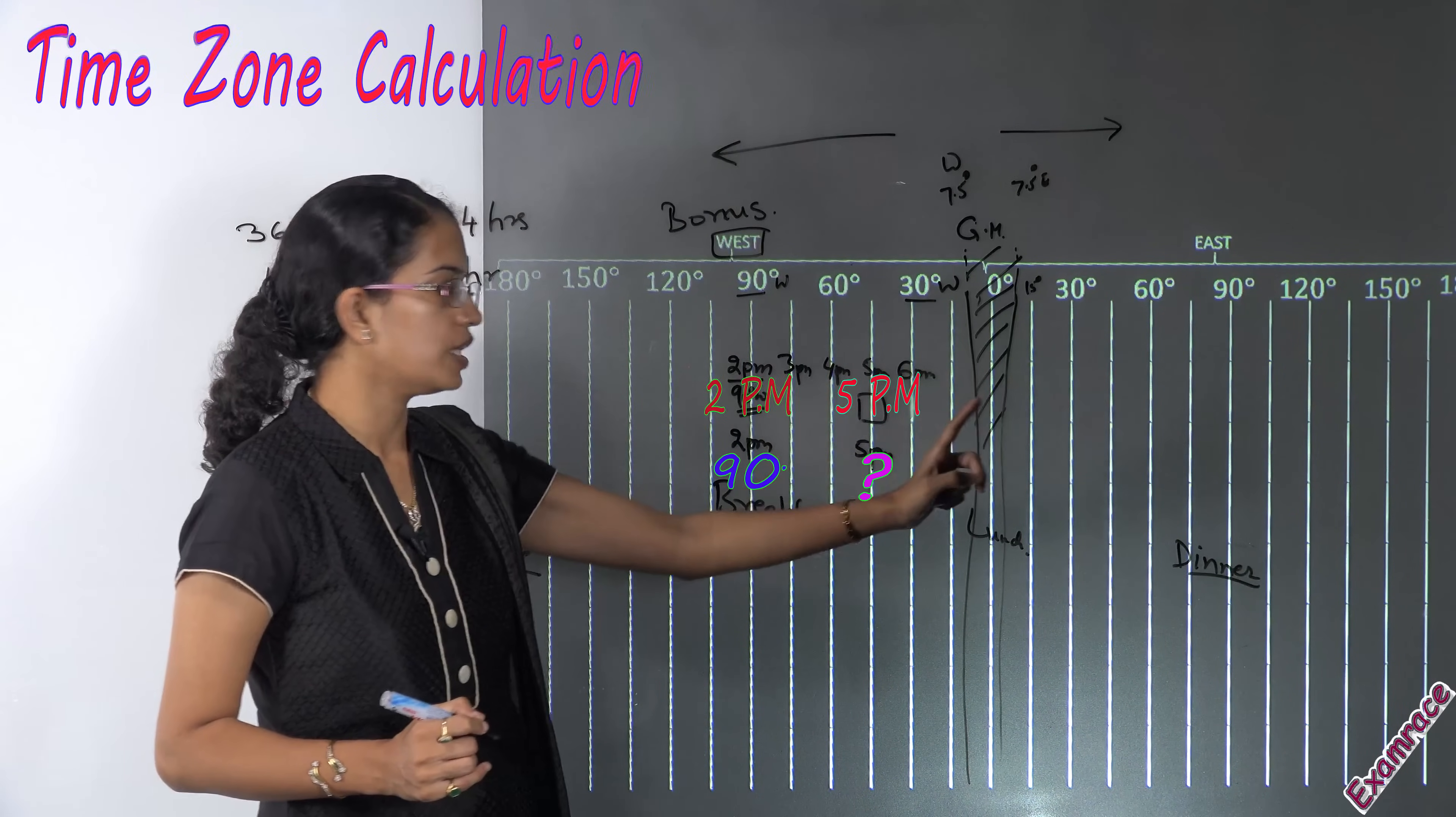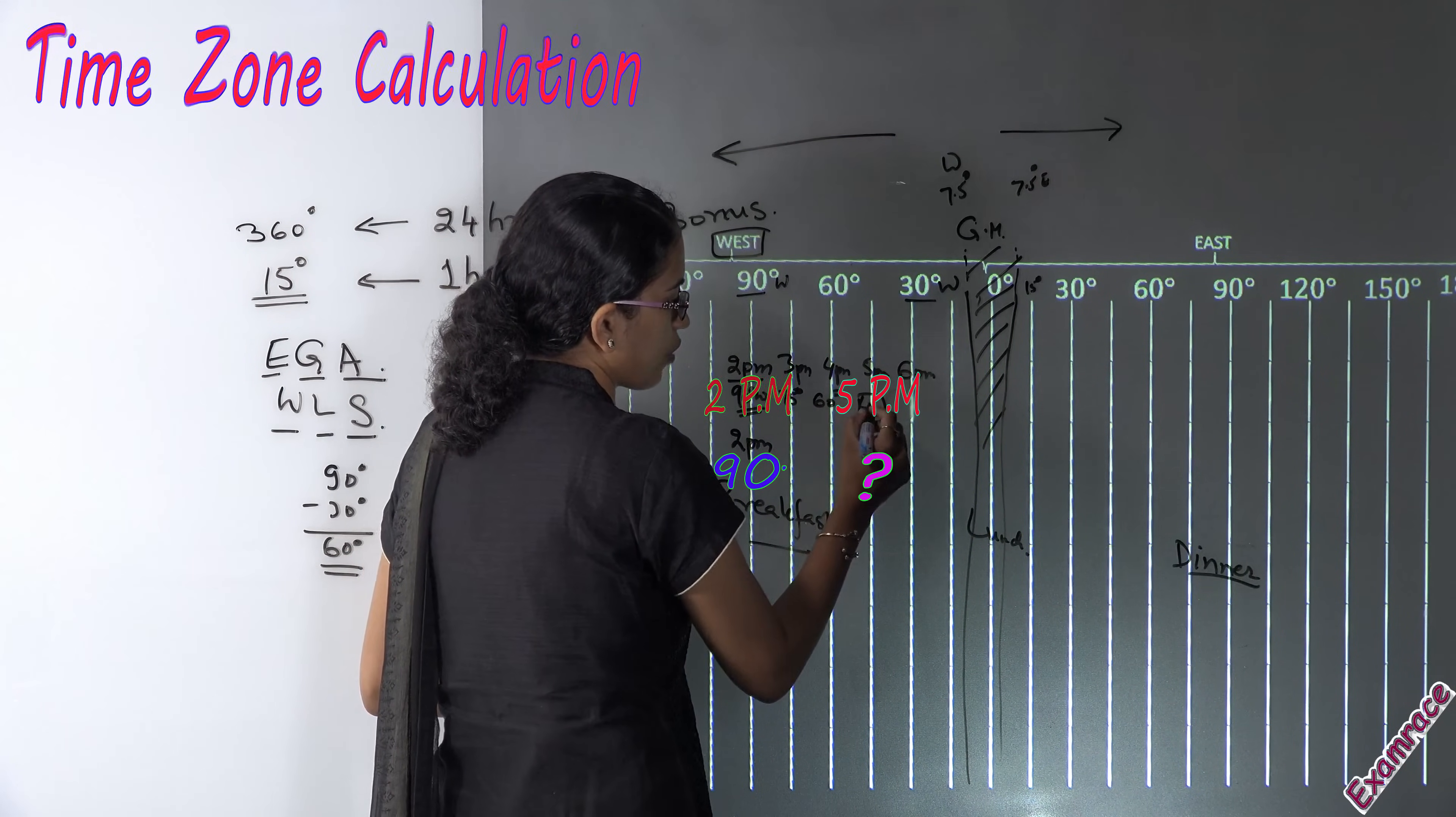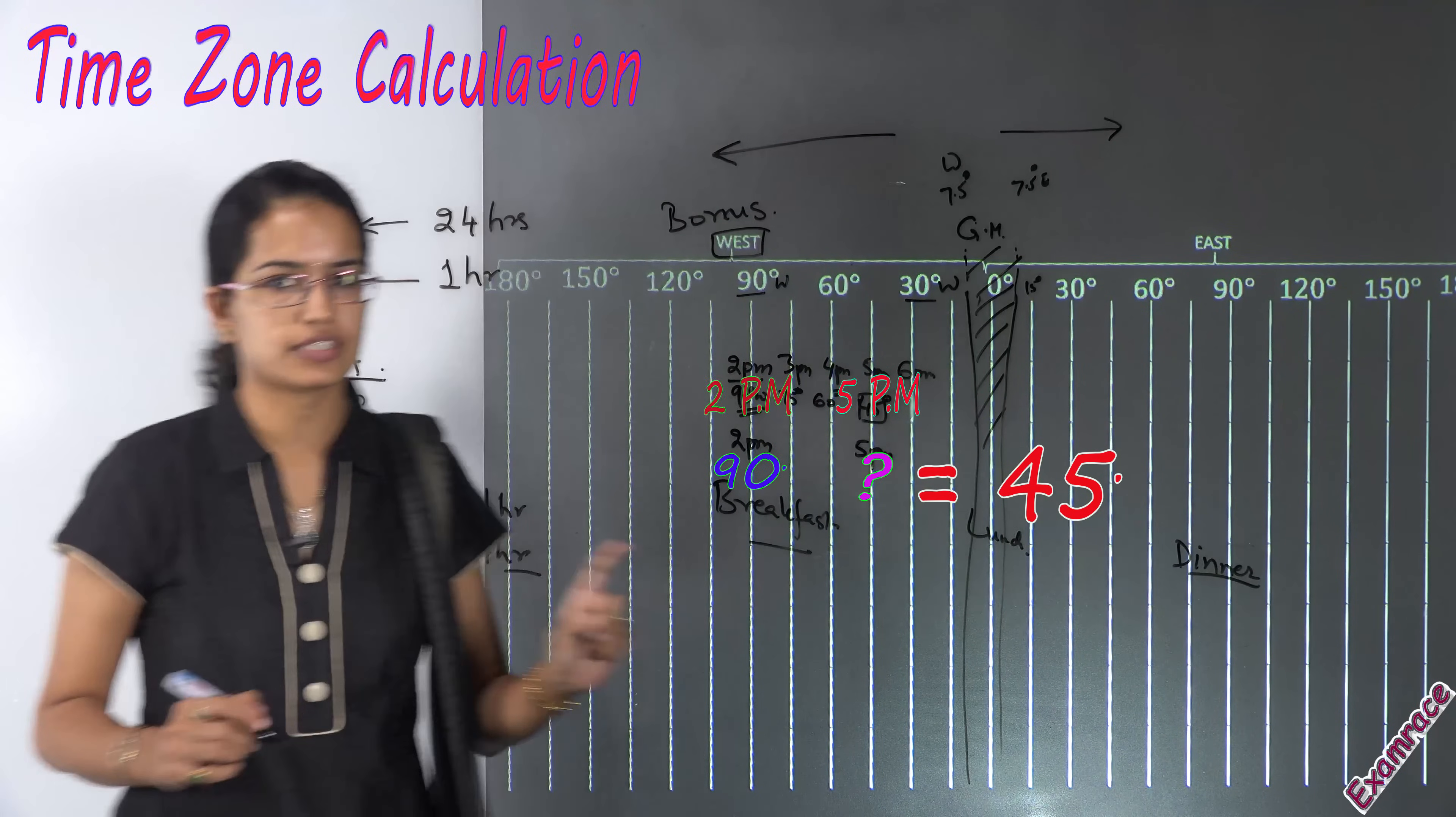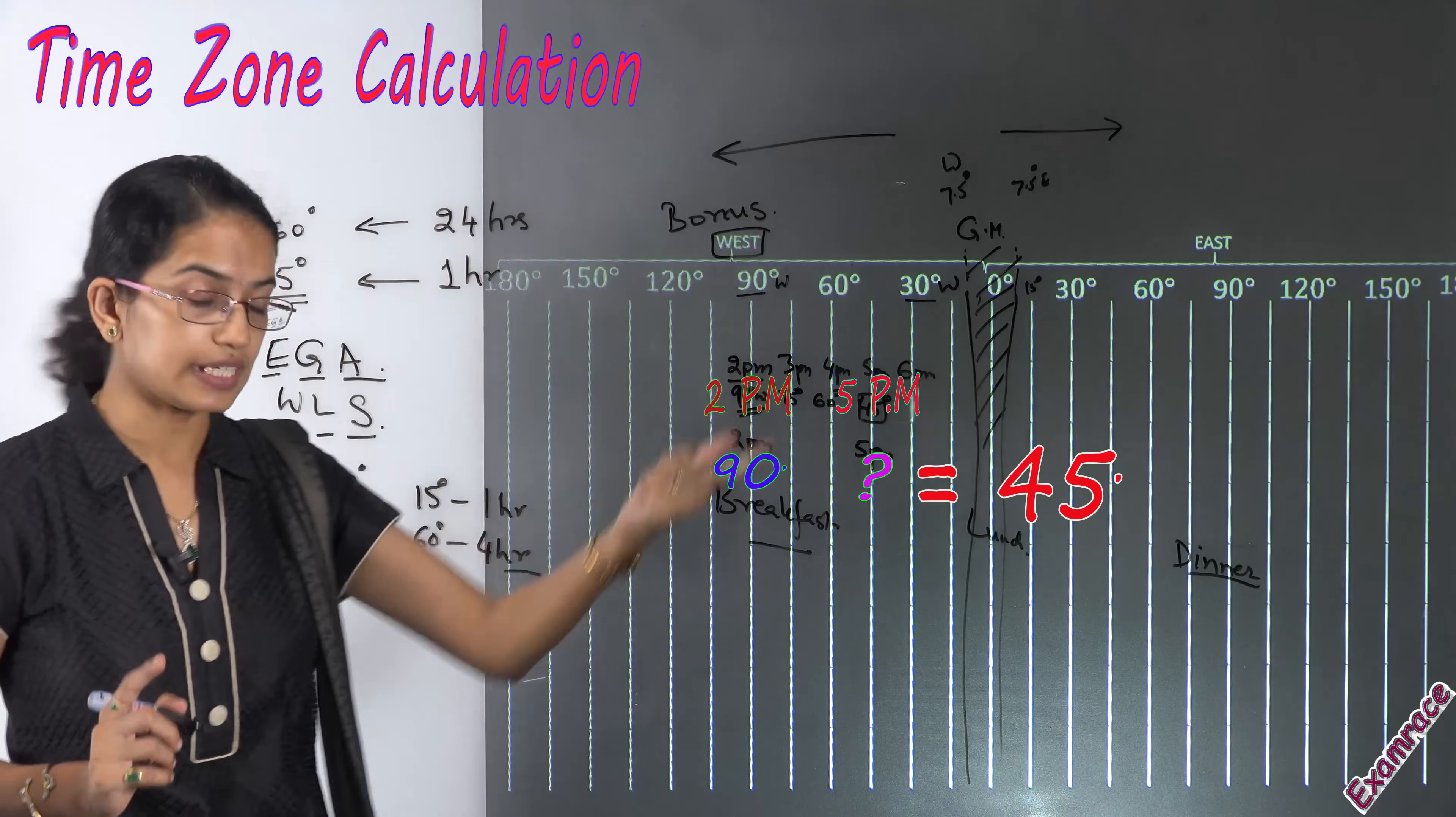I shift towards eastern side. So I have 90 degrees west, 75 degrees west, 60 degrees west and 45 degrees west. So similarly I can say at 45 degrees west I would have 5 PM as my time. That's one very simple methodology of solving the questions where we are moving towards east.